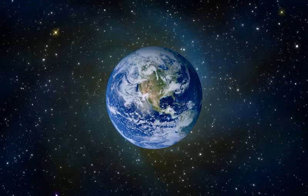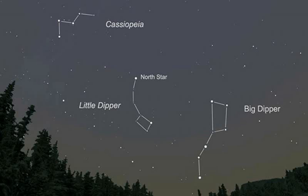In the Northern Hemisphere, we look at the stars, and we see star formations we all recognize, such as the Big Dipper, the Little Dipper, and Cassiopeia.